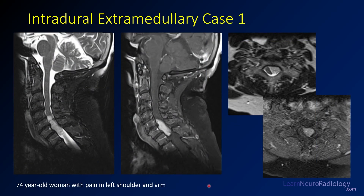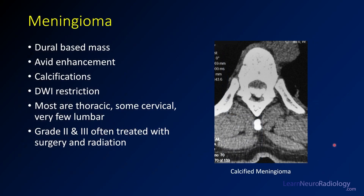Now we're going to look at some intradural extramedullary cases. Case number one: a 74-year-old woman with pain in the left shoulder and arm. On fat-saturated T2, you see a pretty well-demarcated mass within the spinal canal — the dura is outside it. On post-contrast fat-saturated images, you see the same thing: a well-demarcated mass with pretty homogeneous enhancement. On axial images, the spinal cord is deflected to the right, with significant mass effect. This is an example of a meningioma.